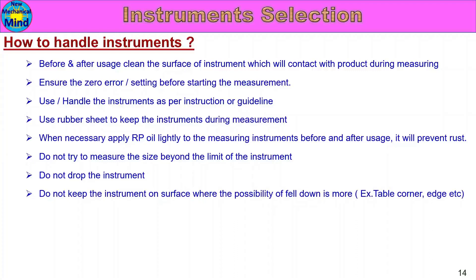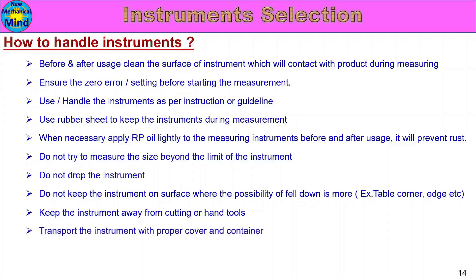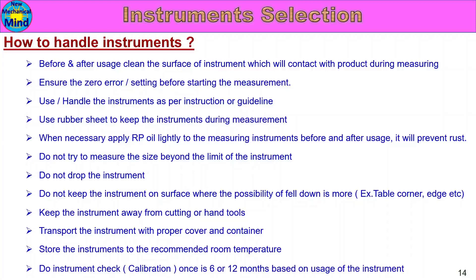Do not keep the instrument on the surface where the possibility of falling down is more, such as a table corner or edge. Keep the instrument away from cutting or hand tools and machine tools, as contact may damage or scratch the instrument. Transport the instrument with proper cover and container — use cushioning, covering, and wrapping in a box. Store the instruments at the recommended room temperature as per the manufacturer. Do instrument check — that is calibration — once every 6 or 12 months based on usage of the instrument.